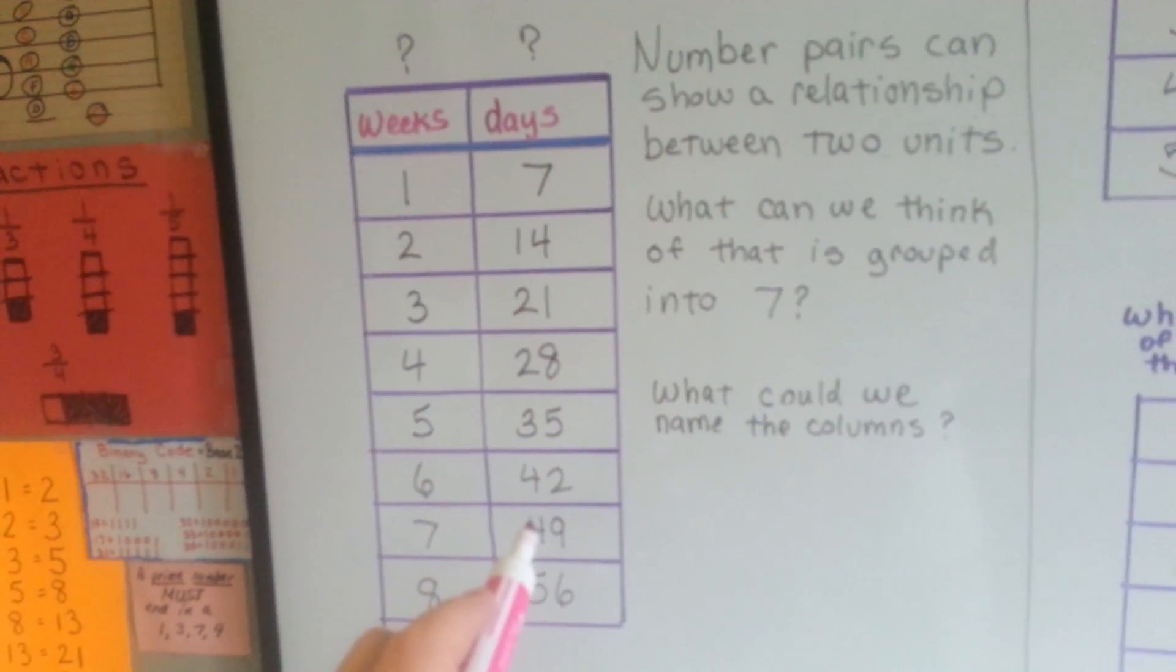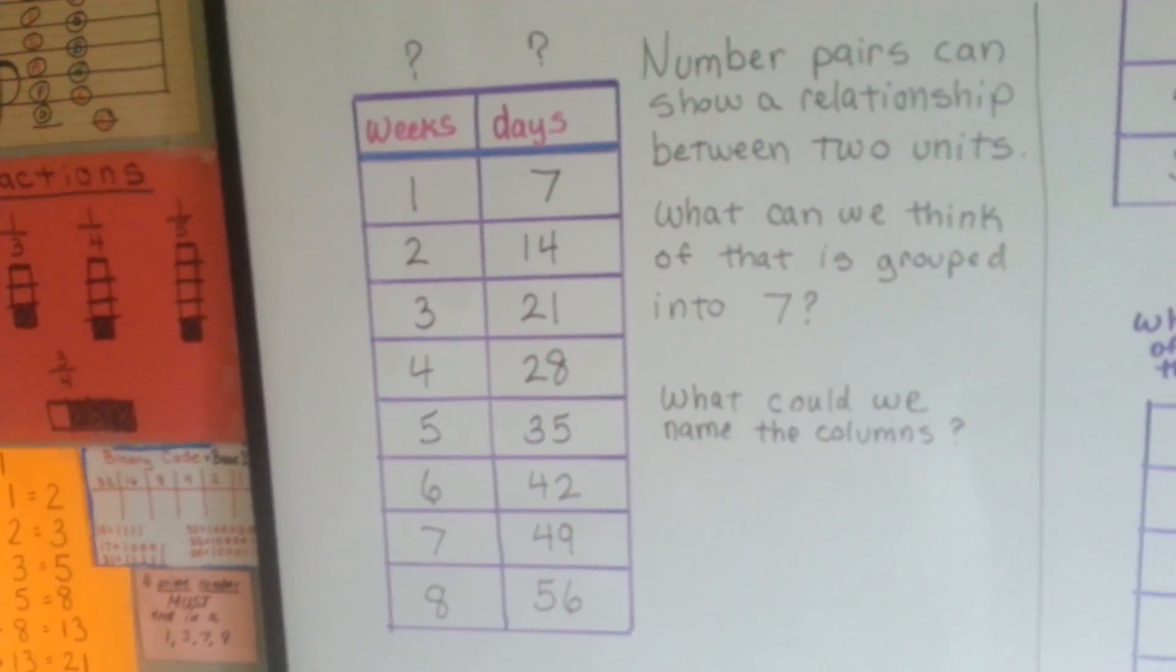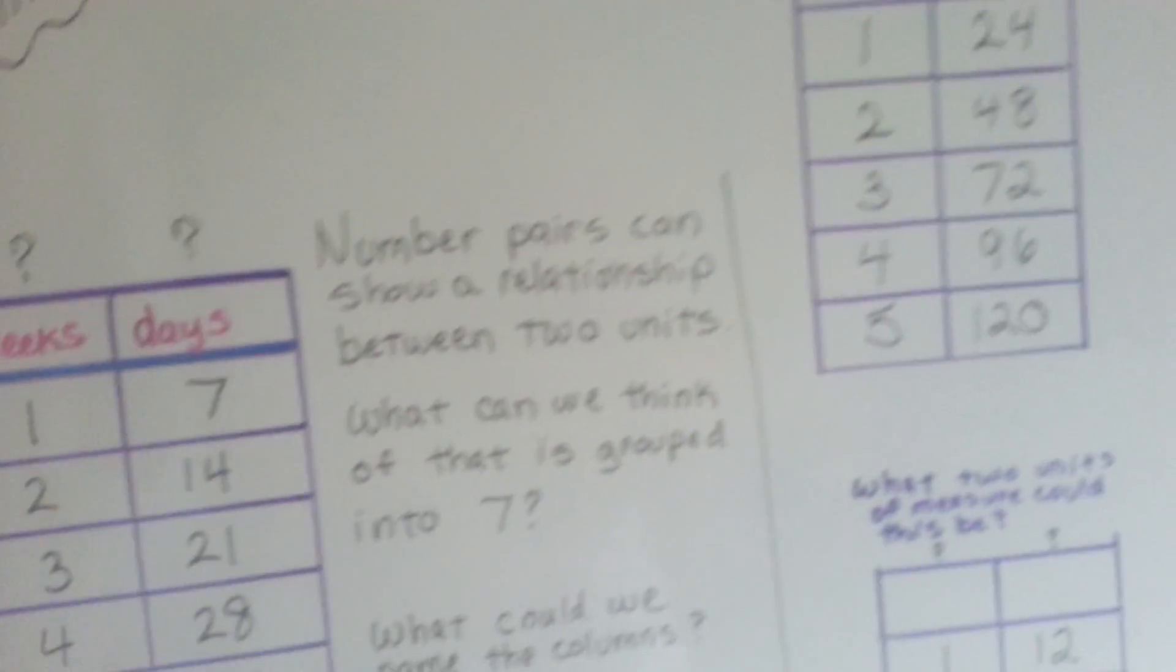Seven weeks is 49 days because seven times seven is 49. So can we do some other ones?